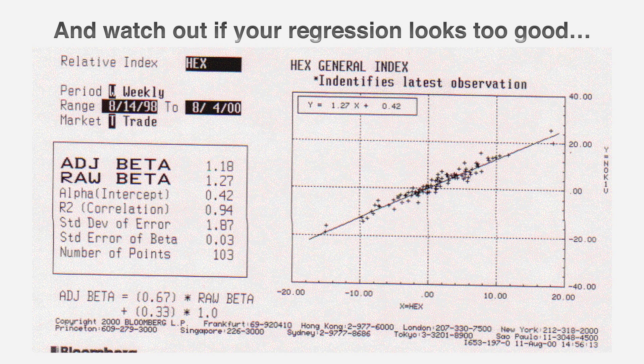Be very careful — the worst beta estimates often come from the best-looking regressions. My favorite example is a beta page I printed off for Nokia. Nokia is a Finnish company, and when I asked for a beta from Bloomberg, the page showed a great-looking regression — high R-squared, low standard error. But it's deceptive because this is a regression of Nokia against the Helsinki stock exchange, and Nokia was about 80% of that exchange at the time. So what you have is a regression of Nokia against Nokia — it tells you absolutely nothing about how much risk Nokia will add to your portfolio.